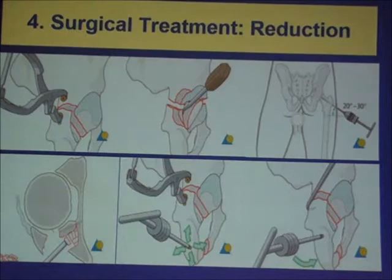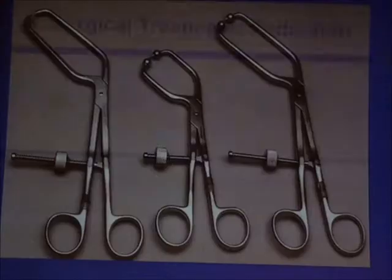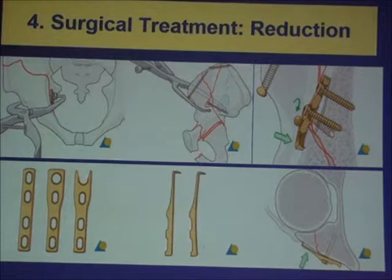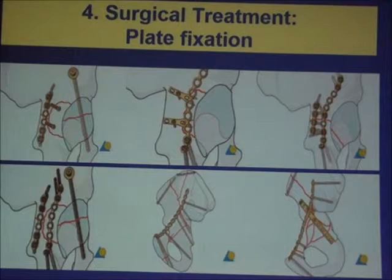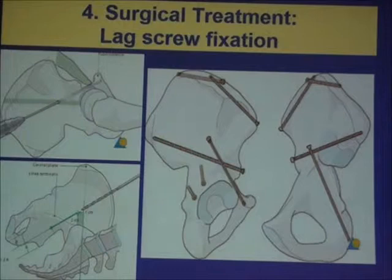Reduction is the most important factor in treating these injuries. We have all the techniques: direct and indirect methods of reduction, the joystick technique, traction, side traction, longitudinal traction, direct clamps, and pelvic clamps. You should use all tricks to achieve anatomical reduction, including using the plate as a tool of reduction. After achieving reduction, we maintain it through plate fixation combined with lag screw or column screw fixation. According to the fracture pattern, we may use lag screws alone or with plate fixation.